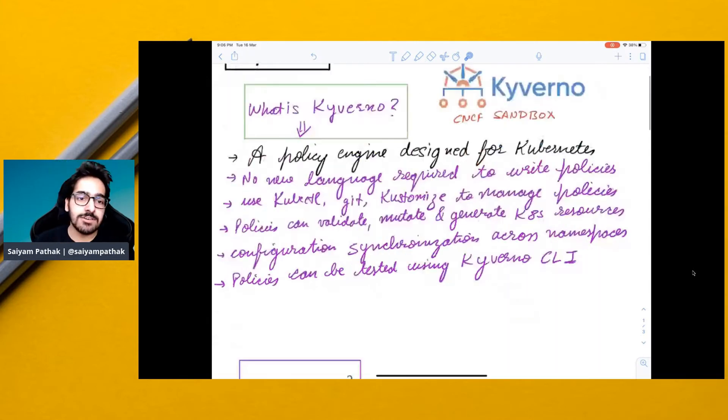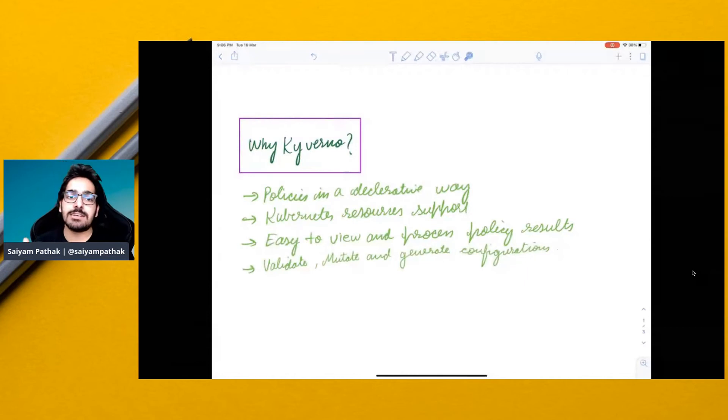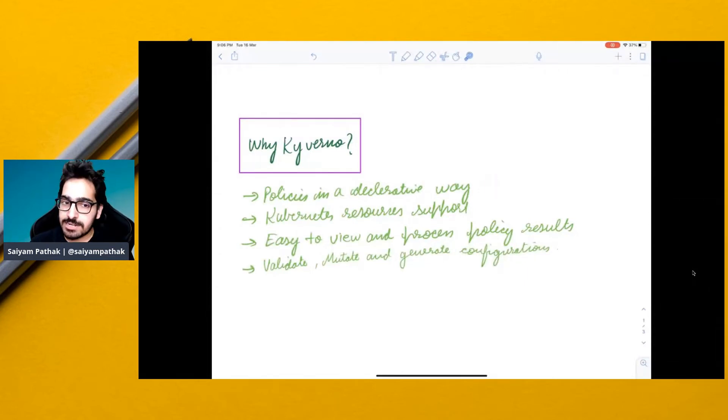Now why Kyverno? Just because we need the policies and we need the policies in a very easy way. You can specify the policies in a declarative manner. Kubernetes resources support. So it supports all the resources. Easy to view and process the policy results and again validate, mutate and generate configurations.